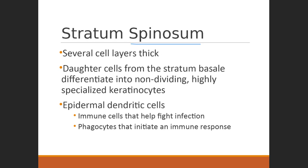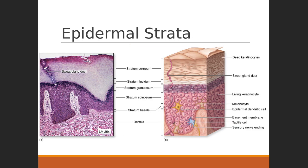In the stratum spinosum we also see epidermal dendritic cells — immune system cells ready to be part of that first physical barrier for recognition and support against anything trying to invade the body through the surface. Everything from the stratum basale up to this layer is stratum spinosum.